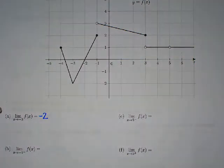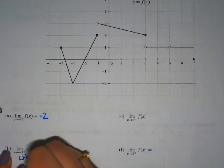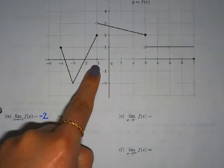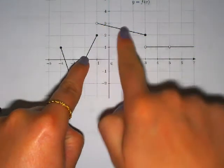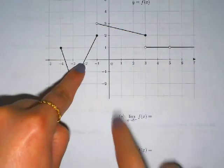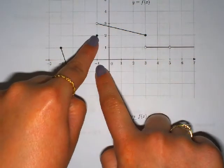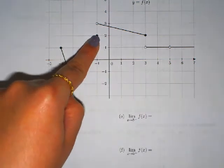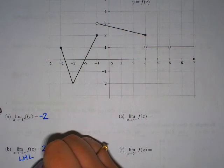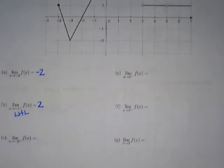Now we have negative 1 from the negative side — that's a one-sided limit, specifically the left-hand limit. We want to approach negative 1 from the left side. The graph is over here on the left, not to the right of negative 1. So I follow the graph toward x = negative 1 and see what y value I approach. As I get close to x = negative 1 from the left side, I approach 2 in the y value.